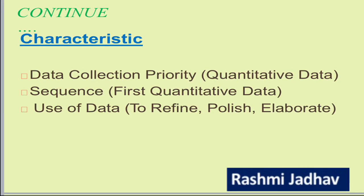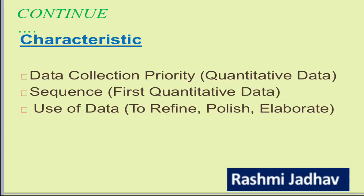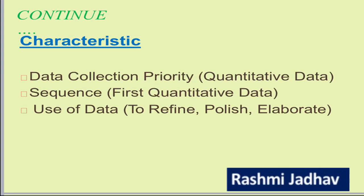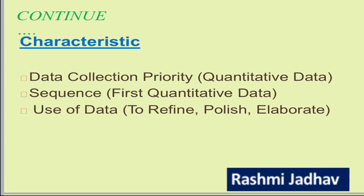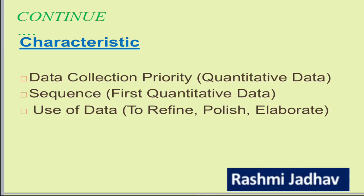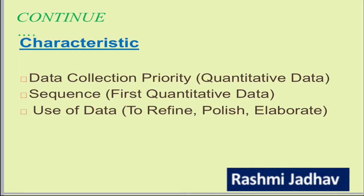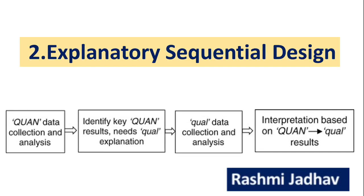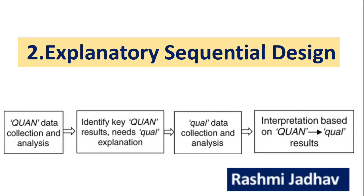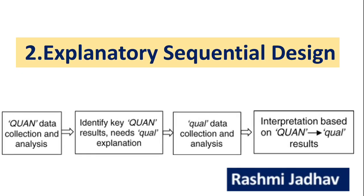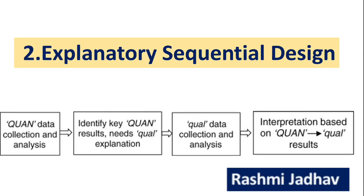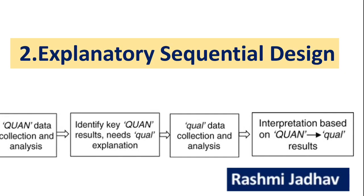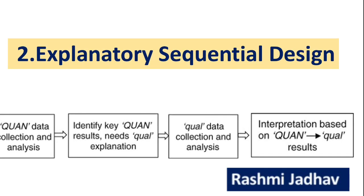The characteristics of explanatory sequential design: the priority is to collect quantitative data first. The sequence must be maintained — first quantitative, then qualitative. The use of data is to refine, polish, and elaborate. Looking at the diagram: quantitative data is collected and analyzed first, key quantitative results are identified, then qualitative data is collected and analyzed to provide explanation, and finally we interpret the results and check the explanations about the quantitative data.